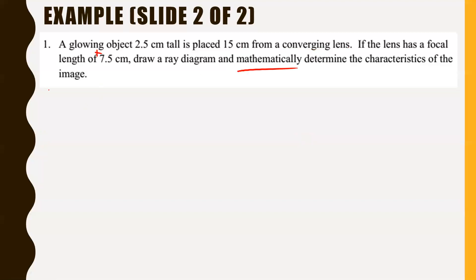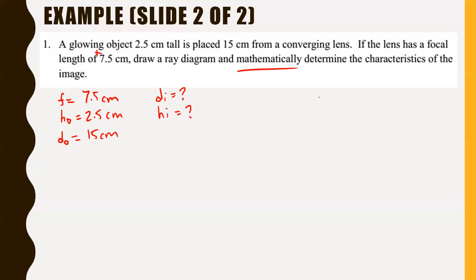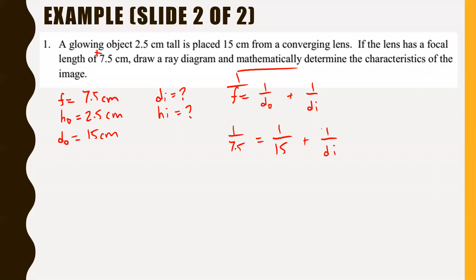Mathematically: focal length F = +7.5 cm, object height HO = 2.5 cm, object distance DO = 15 cm. Using the formula 1/F = 1/DO + 1/DI: 1/7.5 = 1/15 + 1/DI. Rearranging, DI = 15 centimeters. That means the image shows up at the same distance from the lens as the object — which the diagram kind of showed, though it wasn't drawn to scale.